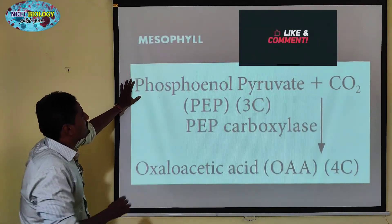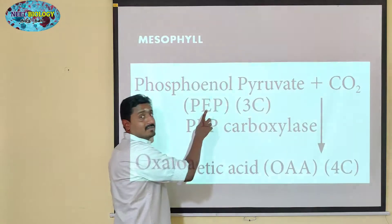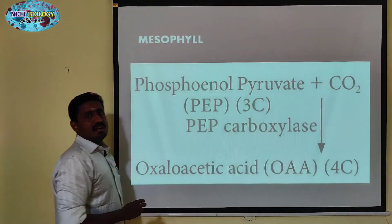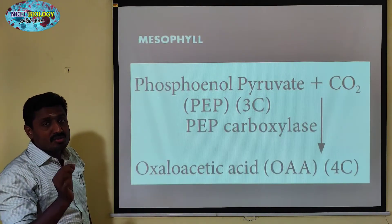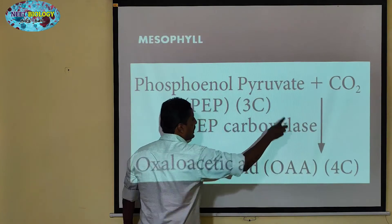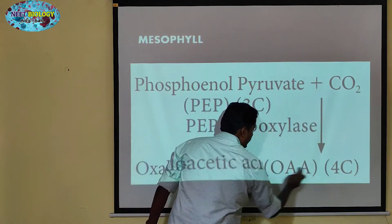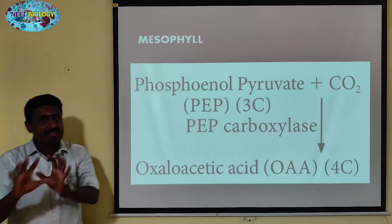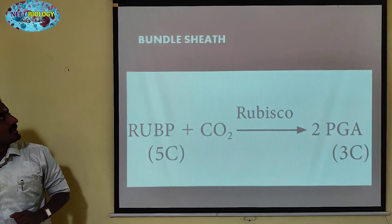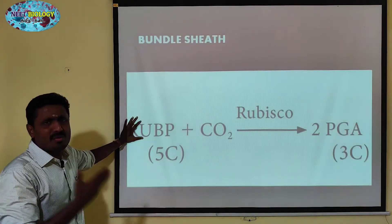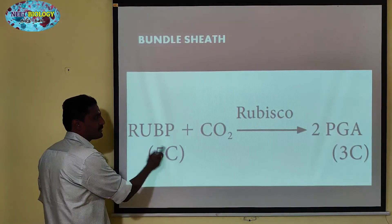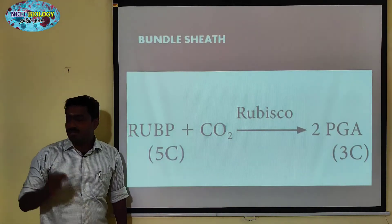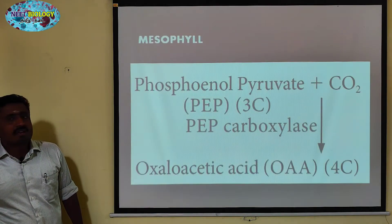All the pyruvate is regenerated. CO2 is fixed — it's a 3-carbon compound plus one carbon dioxide. The first step involves PEP carboxylase; the second step involves RuBP in the C3 cycle — it's a 5-carbon compound. From RuBP, two molecules of PGA, a 3-carbon compound, will be formed.